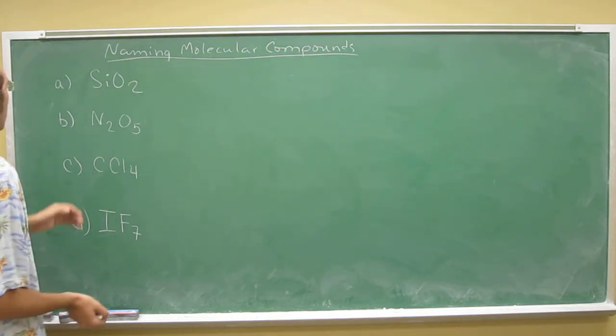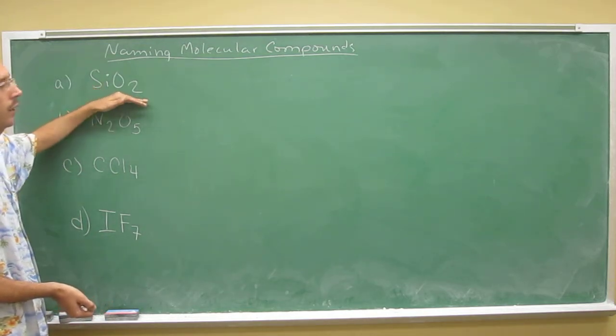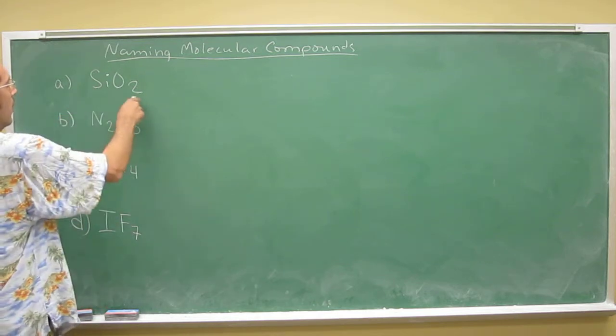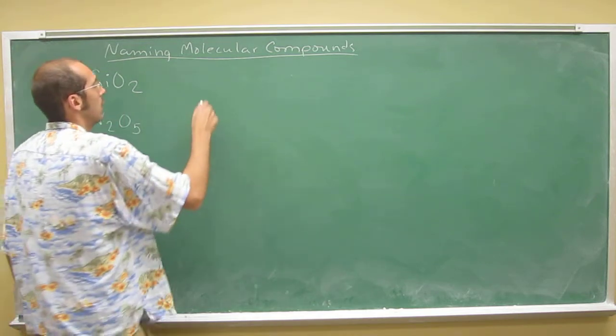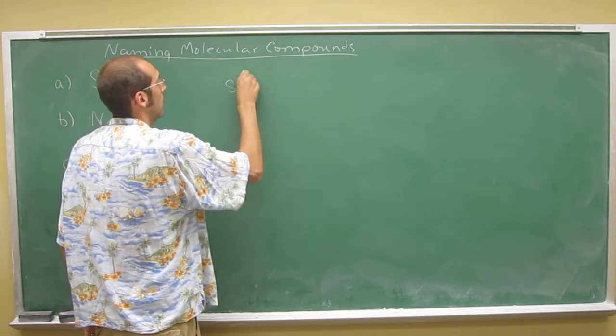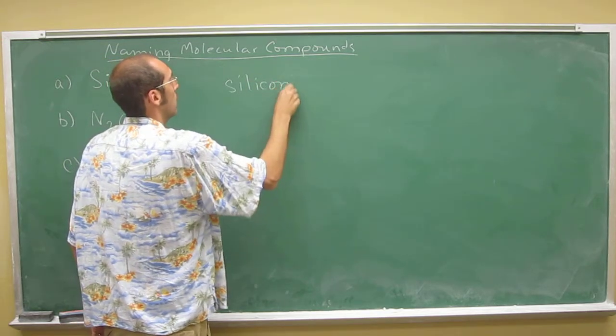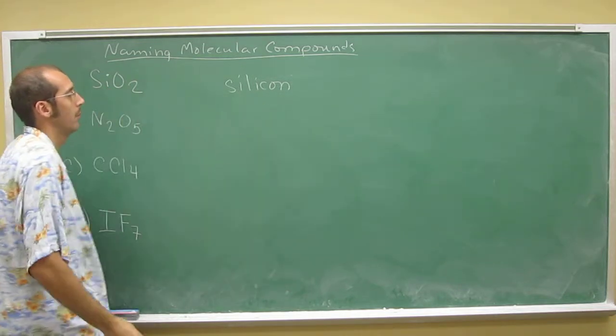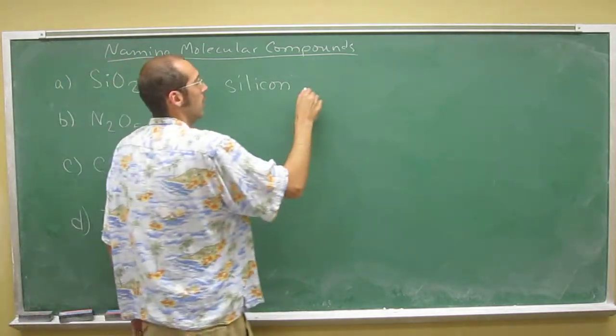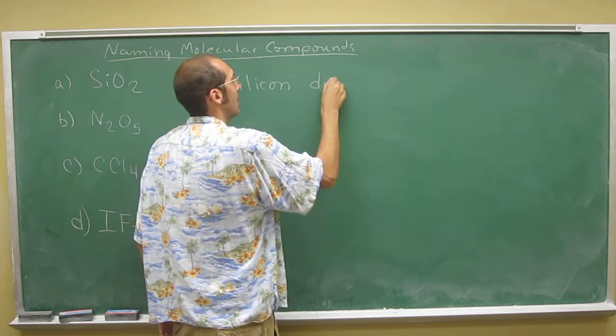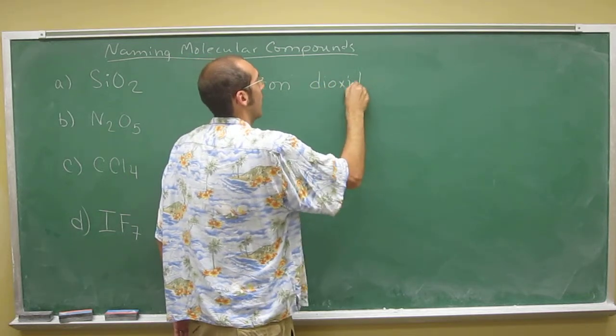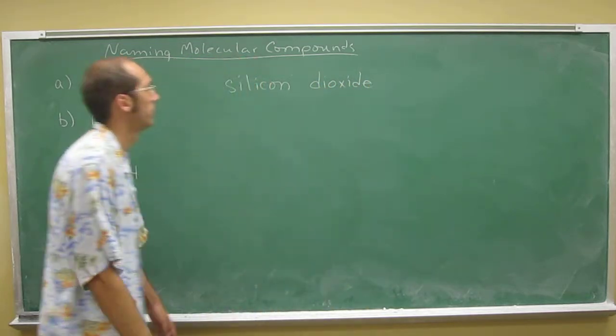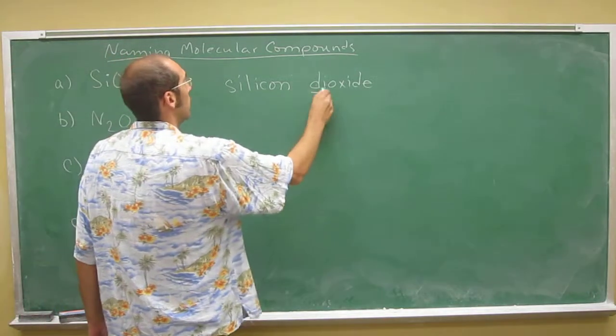So this first one, silicon and oxygen, right, but there's two oxygens for every silicon. So you say silicon - if there's only one of the first element that's listed, you just write the element itself. So silicon, but there's two oxygens, so you say dioxide. Di, referring to two.